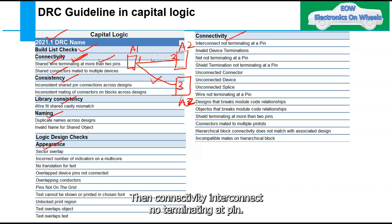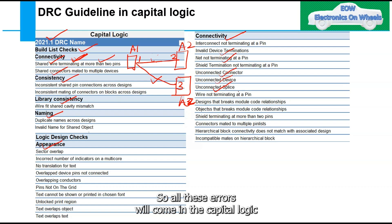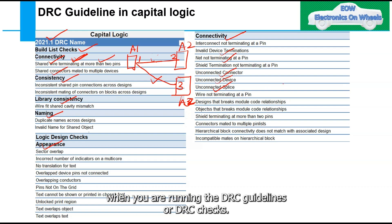Additional DRC checks include consistency checks for inconsistent shared pin connections across the design library, naming errors, appearance errors, and connectivity errors such as interconnect not terminating at a pin, invalid device termination, unconnected connector, unconnected device, and unconnected splices.